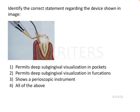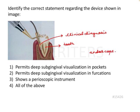Identify the correct statement regarding the device shown in this image. In this image we see a tooth with some clinical diagnosis happening. The tip is going in between the soft tissue and the hard tissue — so this is basically an endoscope for periodontal purposes. This is called a perioscope.